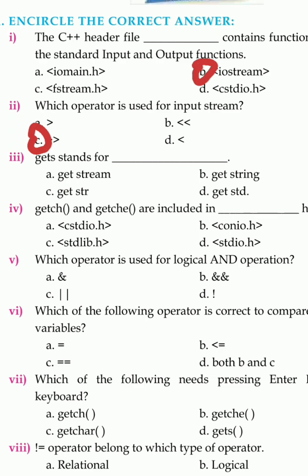get_str is option C, get_str is now option 4. get_ch and get_ch are included in the dash header file. Option A is conio.h, option B is conio.h. Now question number 5.